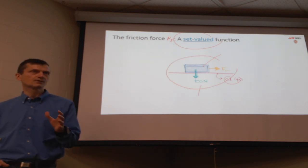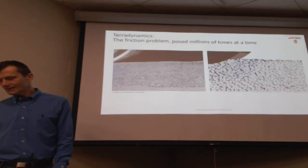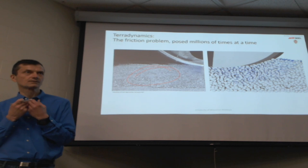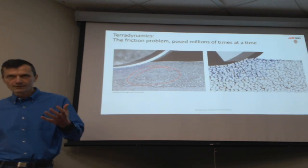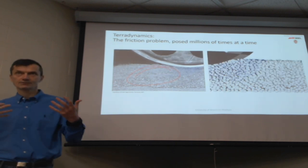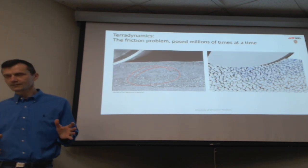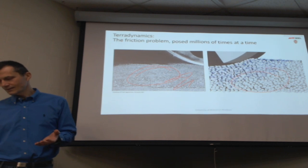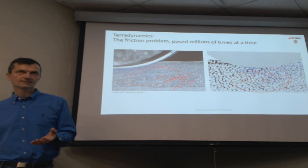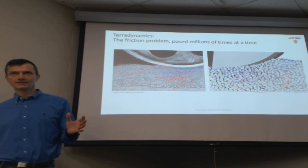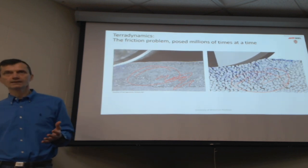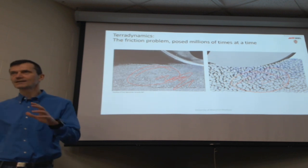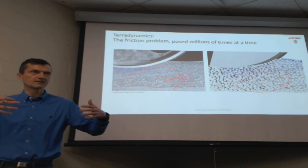If you have one body, it's fairly easy to compute. But the more interesting case is if you have millions of these frictional contact events, and I have to figure out for every single one what the friction force and normal force are. That's why computing is important — you don't want to do this pen and paper. In one cubic meter of sand, you have anywhere between one to two billion elements, which means you have to analyze something like four billion frictional contact events.